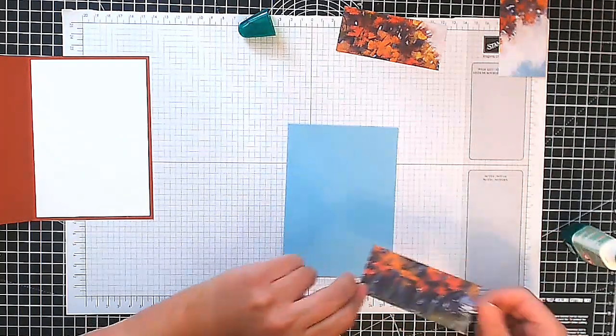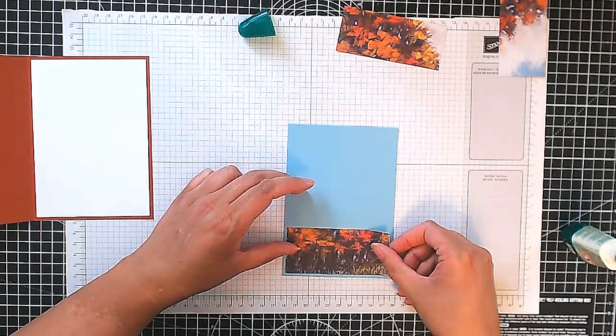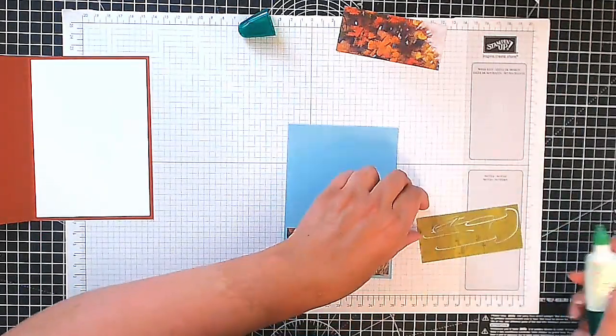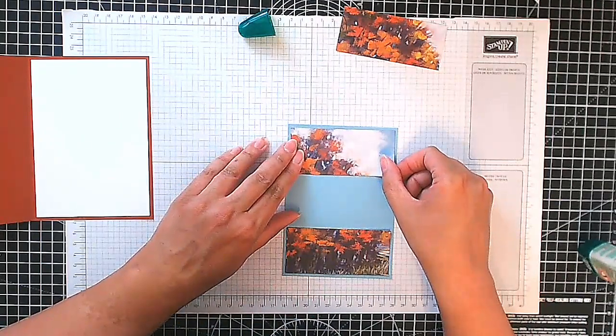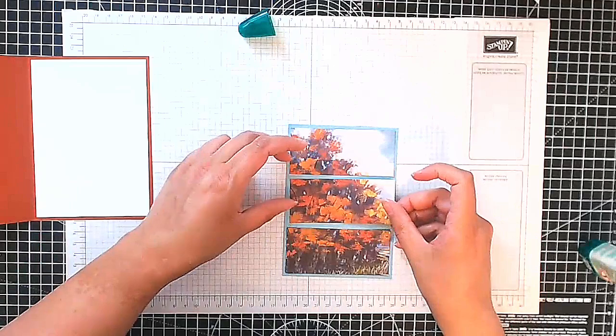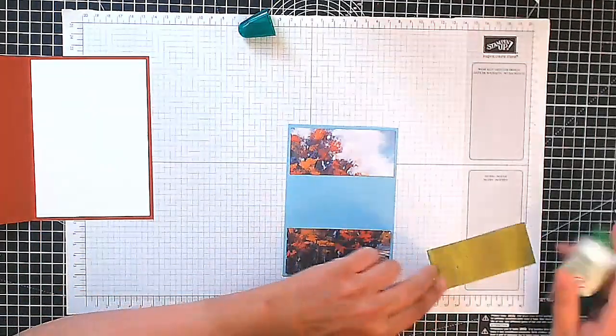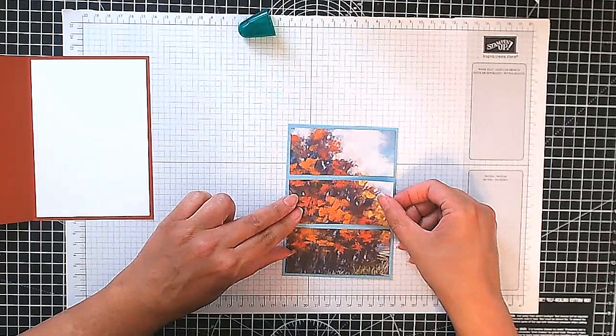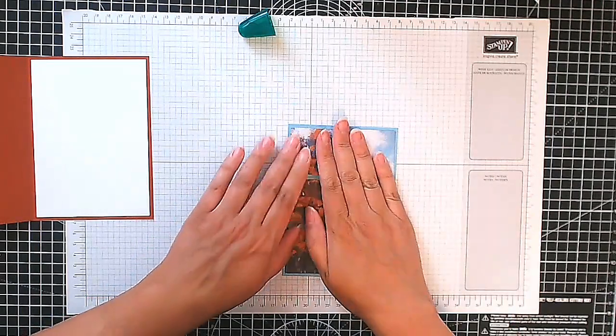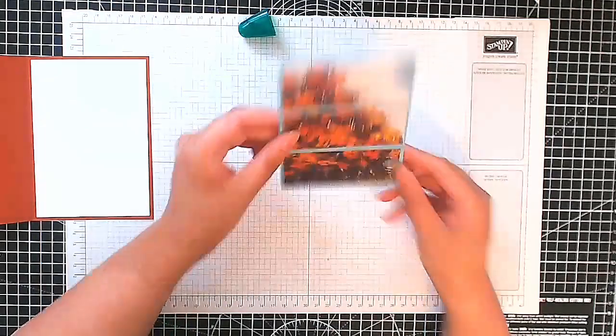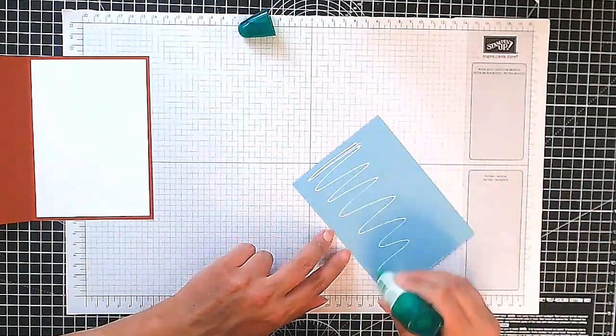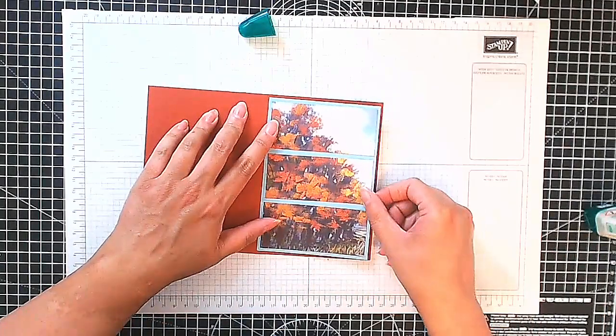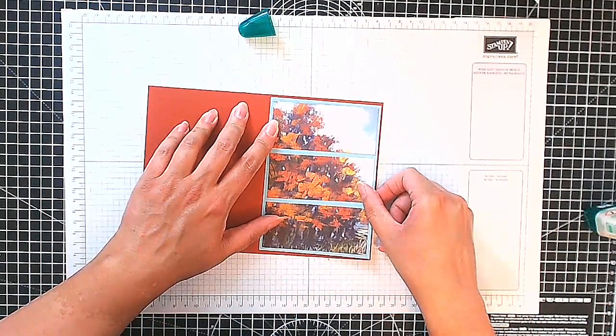So we've got our bottom piece here. And then I'm going to stick the top one. Hopefully be able to get an even amount around each piece. That will do fine. So now let's stick this down to our card base. Just like that.